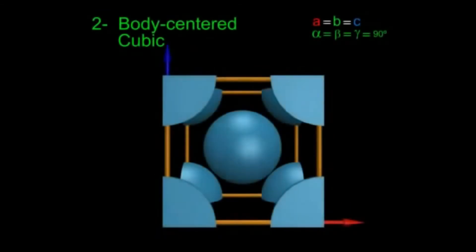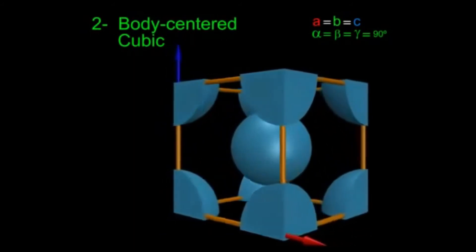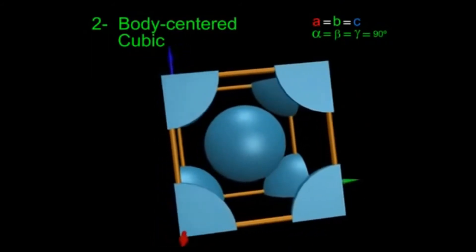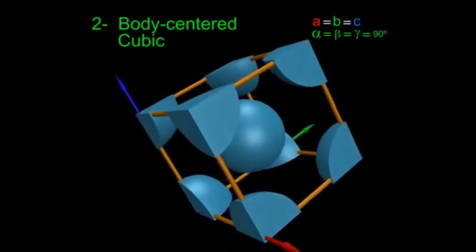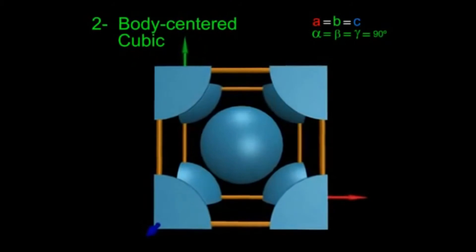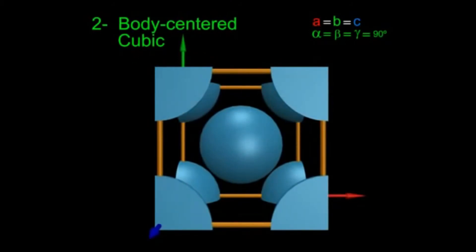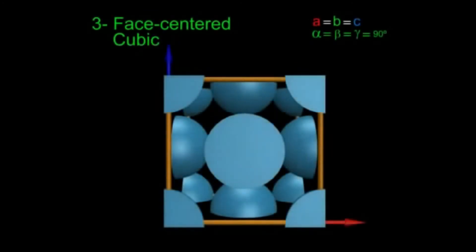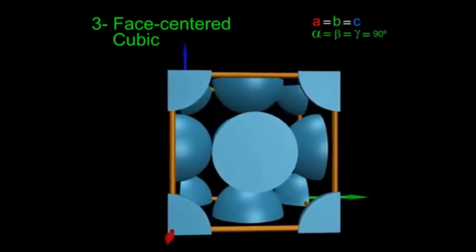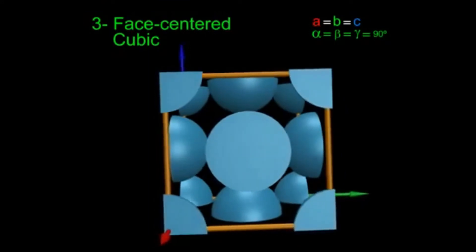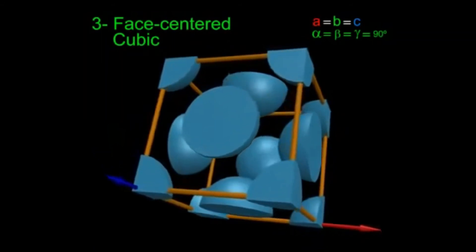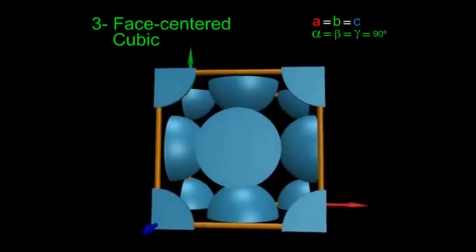The second Bravais lattice is also derived from the simple cubic cell — but in addition to corner atoms, one body-centered atom is present: this is the body-centered cubic (BCC) cell. The third is the face-centered cubic (FCC) cell, where in addition to corner atoms, there are six face-centered atoms on the six faces. In both, a = b = c and alpha = beta = gamma = 90°.